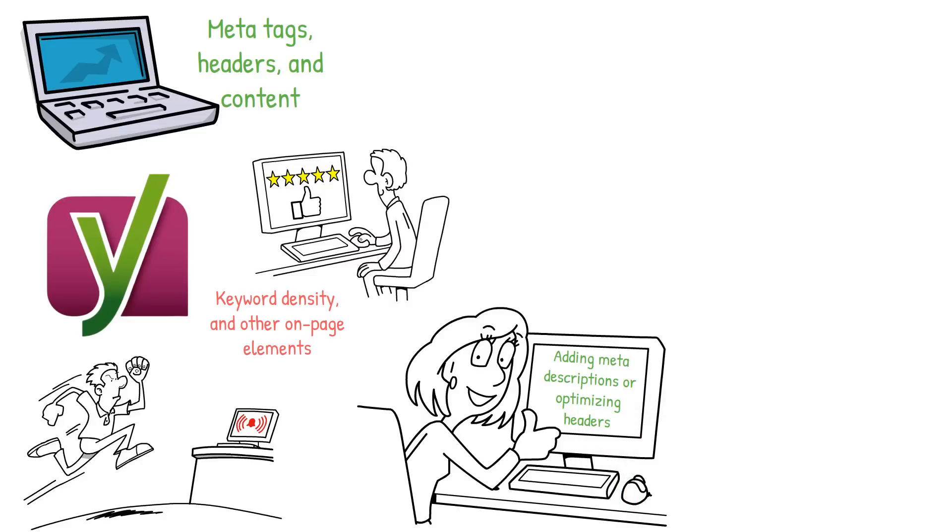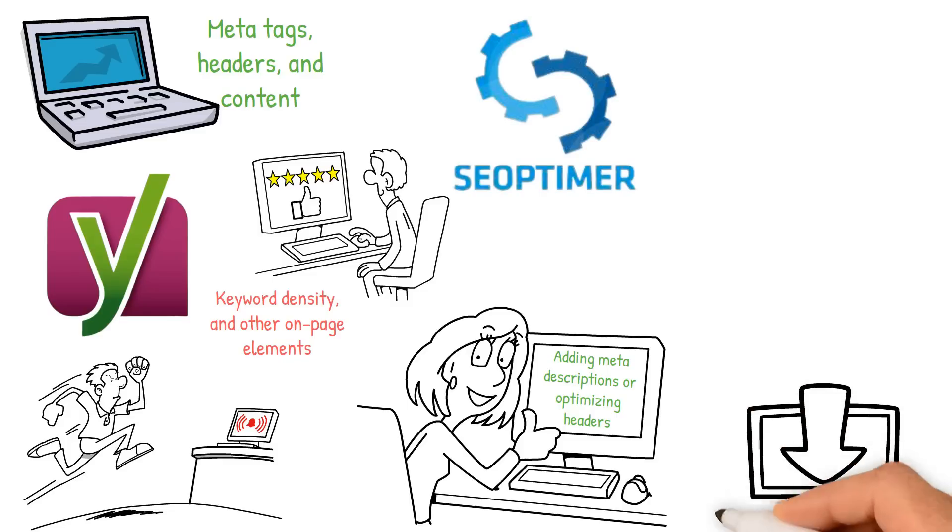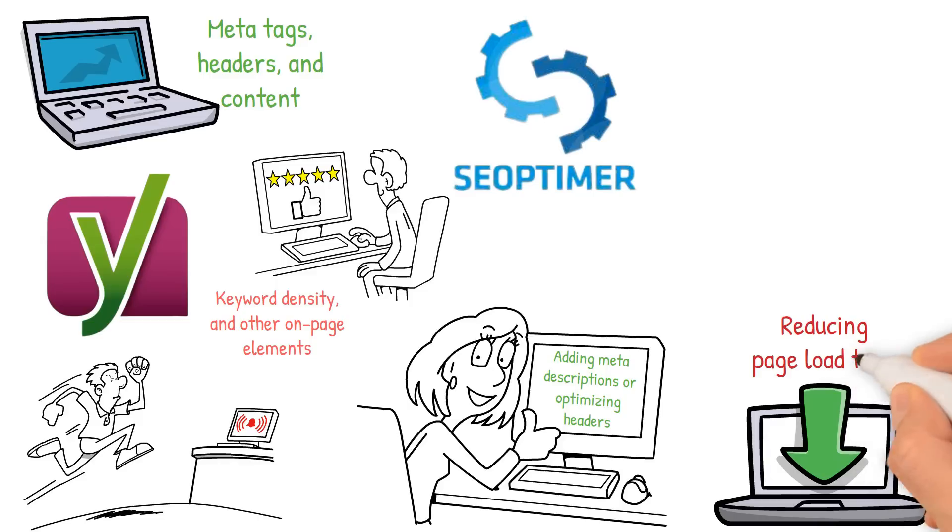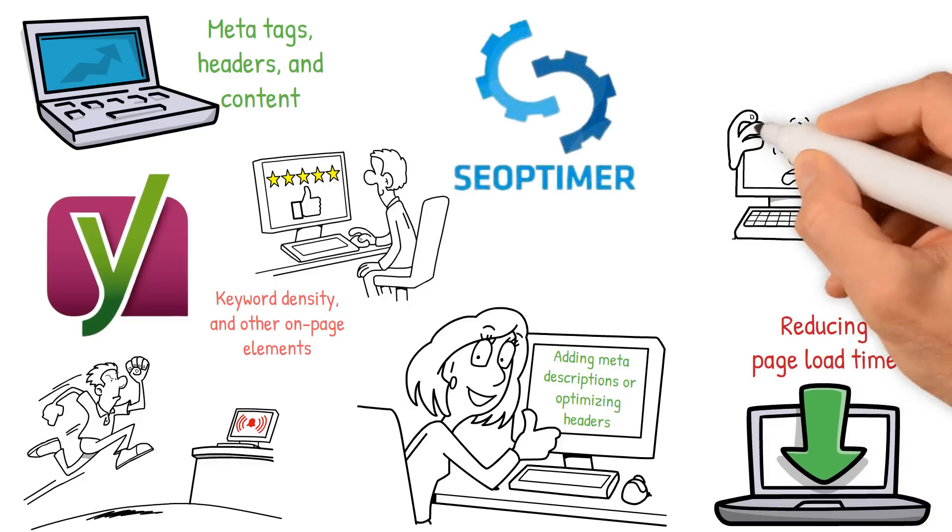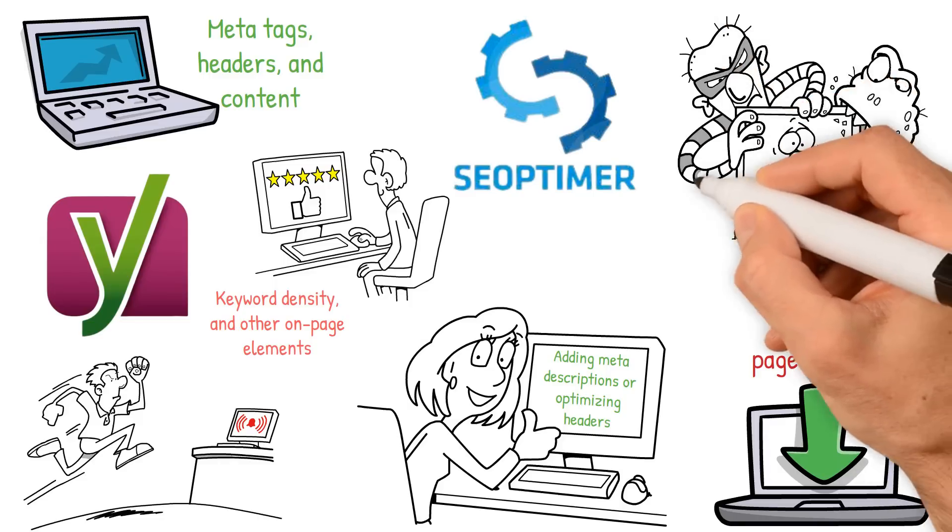Another tool that can help with on-page optimization is SEOptimer. It's a free tool that analyzes your website and provides recommendations for improvement, such as optimizing images and reducing page load time. The tool also checks for broken links, which can negatively impact your website's ranking.